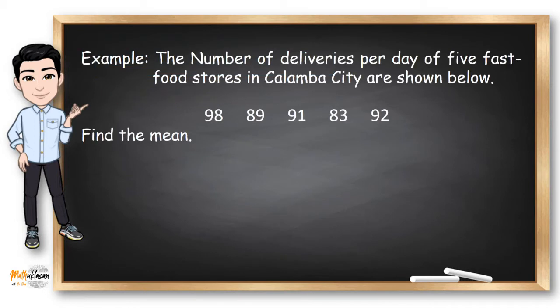For example, the number of deliveries per day of five fast food stores in Kalamba City are shown below. Find the mean of this dataset. What we need to do is to add first these values, then dividing it by five because we have one, two, three, four, five samples.